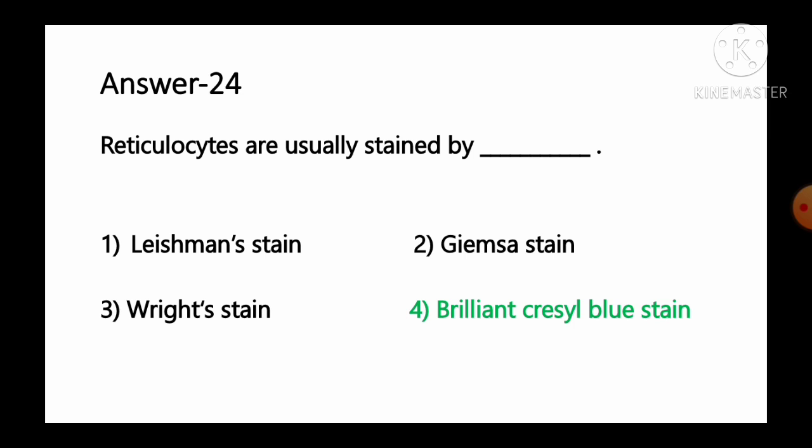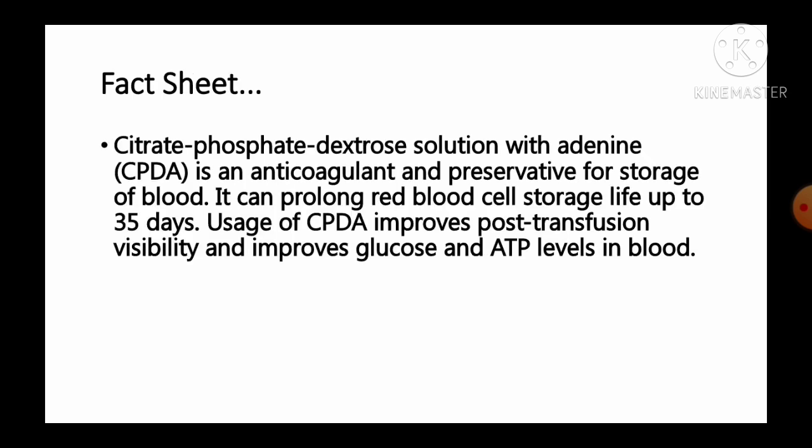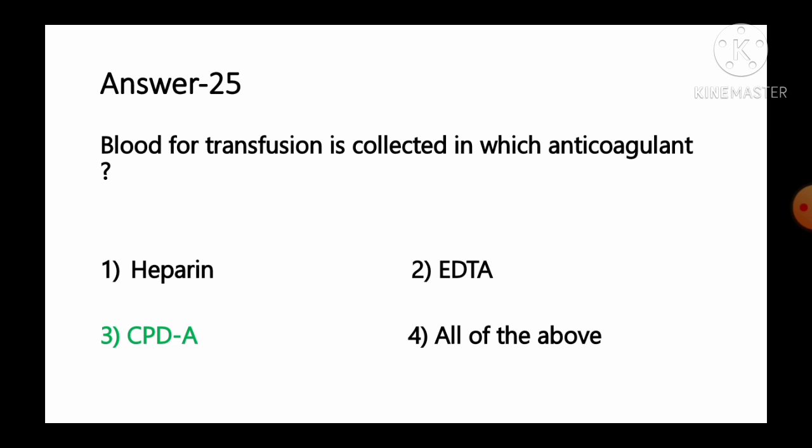Question number 25: Blood for transfusion is collected in which anticoagulant? Options: 1 heparin, 2 EDTA, 3 CPDA, 4 all of the above. Citrate phosphate dextrose solution with adenine (CPDA) is an anticoagulant and preservative of choice for the storage of blood. It can prolong red blood cell storage lifespan up to 35 days and improves post-transfusion viability and glucose and ATP levels. So option number 3, CPDA, is the correct answer.